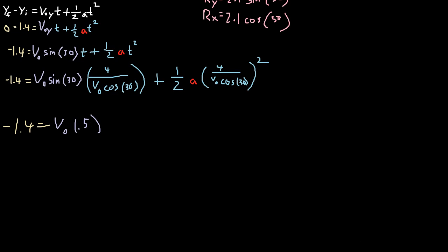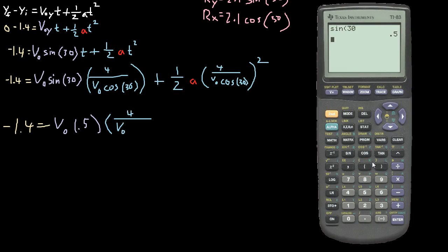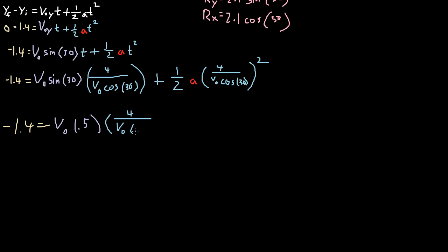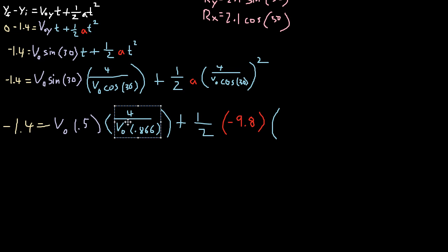So v0, v0 cosine 30, which is 0.5. And then we're going to do 4 over v0 and cosine 30 — cosine of 30 is 0.866. So 0.866. Close parentheses, plus 1 half, a is negative 9.8, times this, times this squared.